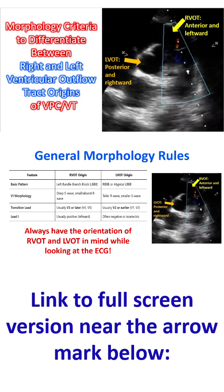The transition lead is usually V3 or later — V4, V5 — in RVOT origin, and usually V2 or earlier — V1, V2 — in LVOT origin. Lead I is usually positive and leftward in RVOT origin, and negative or isoelectric in LVOT origin. This is all based on the relative locations of the LVOT and RVOT, as seen in the echocardiographic picture.